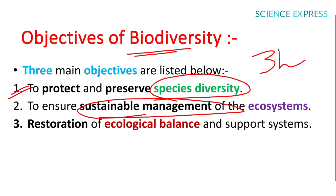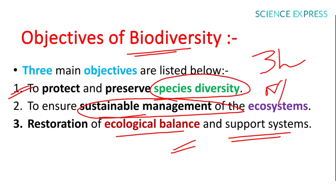The third objective is restoration of ecological balance and support systems. Restoration means bringing back to the former position. Ecological balance is a state of dynamic equilibrium within a community of organisms in which genetic, species, and ecosystem diversity remain relatively stable subject to gradual changes through natural succession. For example, to maintain this balance, CO2 sources have to be reduced and tree planting promoted.